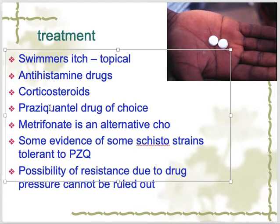When patients receive praziquantel they show a more inflammatory response, so we give them antihistamine drugs and anti-inflammatory drugs — corticosteroids. There is one more drug called metrifonate, which is an alternative choice to praziquantel for schistosoma hematobium.